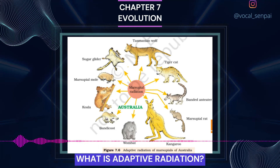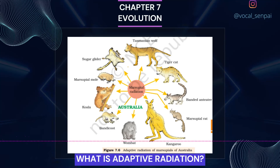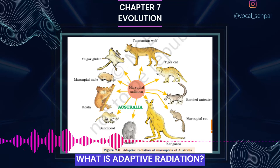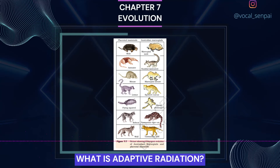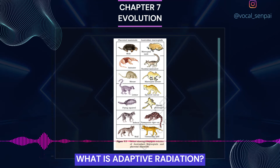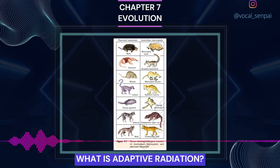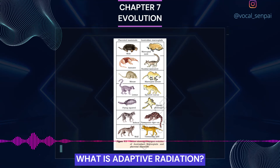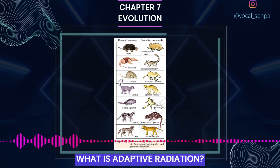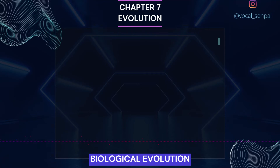Another example of adaptive radiation is Australian marsupials. A number of marsupials, each different from the other, evolved from an ancestral stock, but all within the Australian island continent. When more than one adaptive radiation appeared to have occurred in an isolated geographical area representing different habitats, one can call this convergent evolution. Placental mammals in Australia also exhibit adaptive radiation, each of which appears to be similar to a corresponding marsupial — for example, placental wolf and Tasmanian wolf (marsupial).